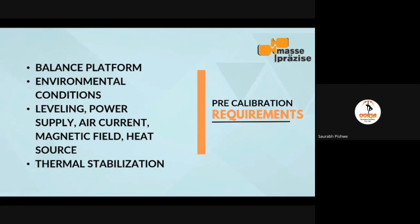The first pre-calibration requirement is the balance platform — the surface on which the balance is resting. It must be rigid, vibration-free, and neat and clean. For environmental conditions, weighing balance calibration and performing daily weighing requires a controlled environment. The deviation in environmental conditions should be minimum. Suppose the temperature is 23 degrees Celsius — we have to maintain that temperature throughout the day. The deviation is more important than the absolute limit; it could be 22, 23, or 24 degrees, but the deviation throughout the day must be as minimum as possible.